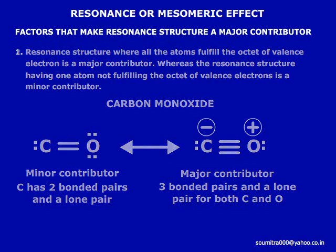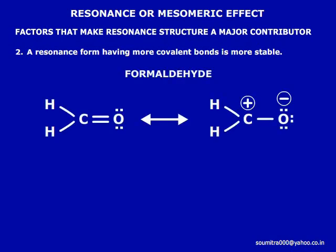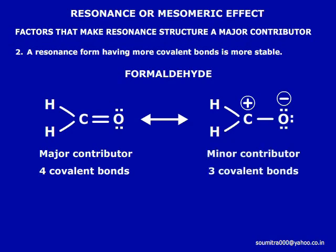Point number two: a resonance form having more covalent bonds is more stable. Looking at the resonance structures of formaldehyde, structure one is more stable because it has four covalent bonds, whereas structure two has only three.